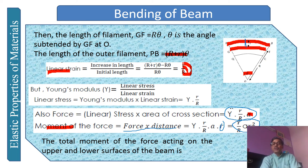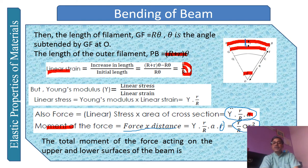To get the total bending moment, we take the summation — that is, the integral — of the moment over all cross-sectional elements. This gives the total bending moment acting from both the upper and lower surfaces of the beam.